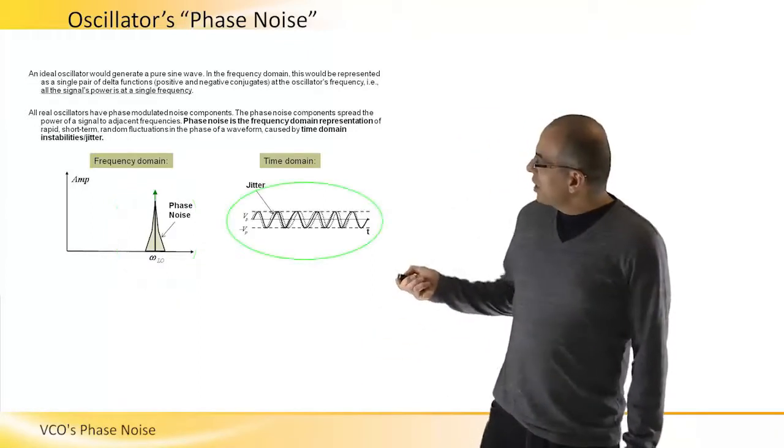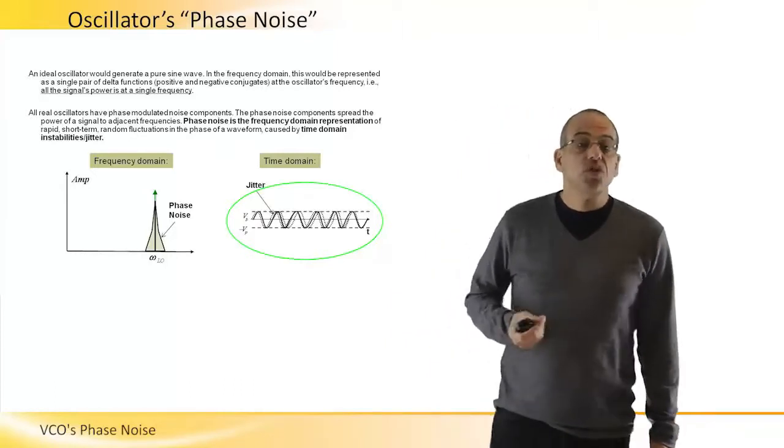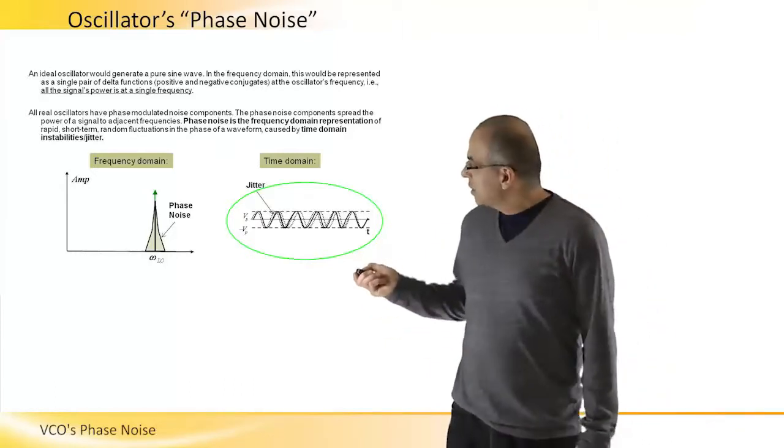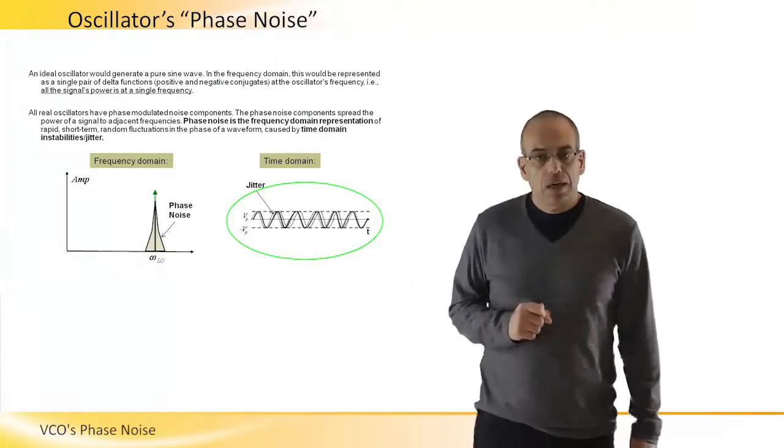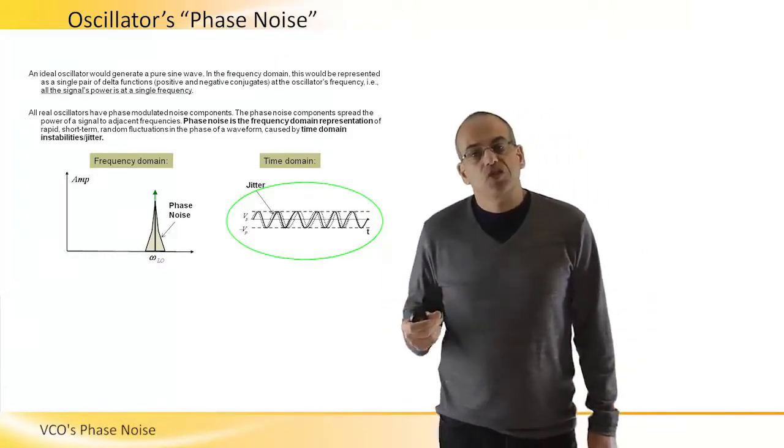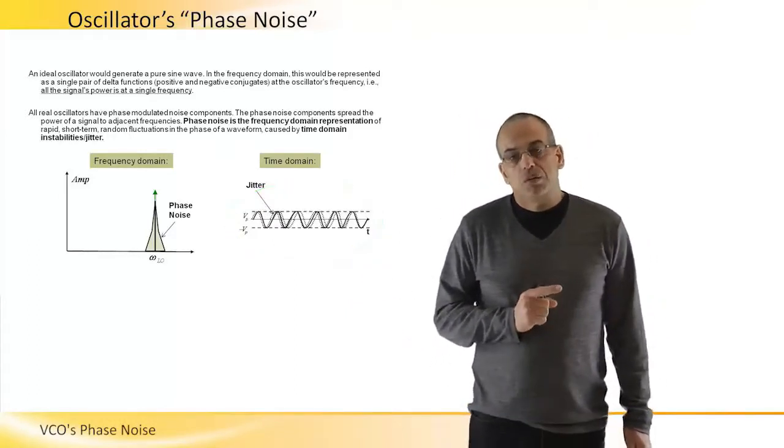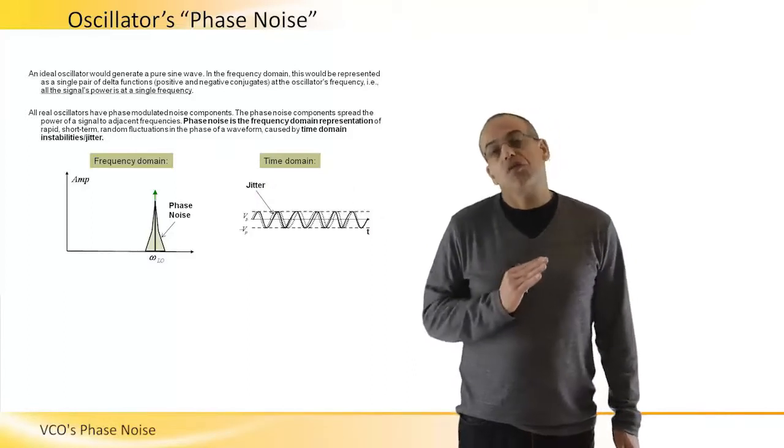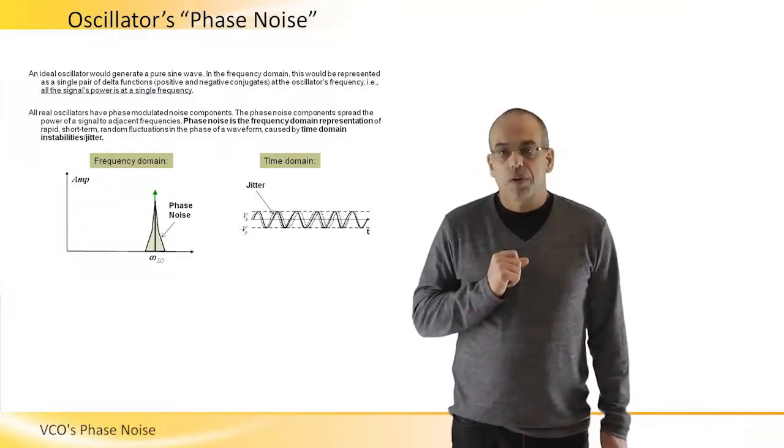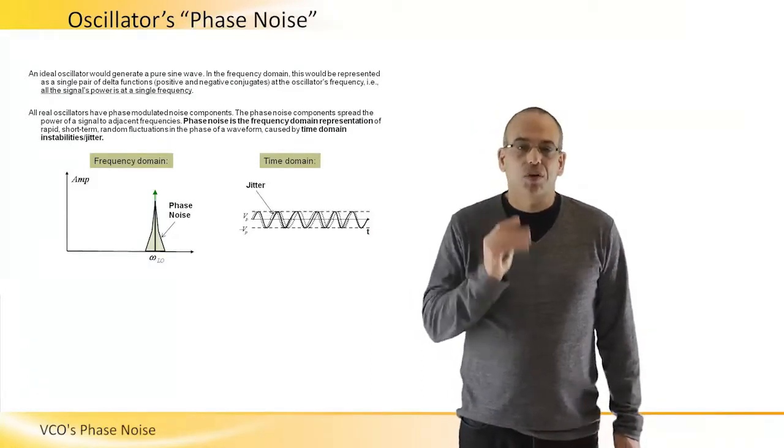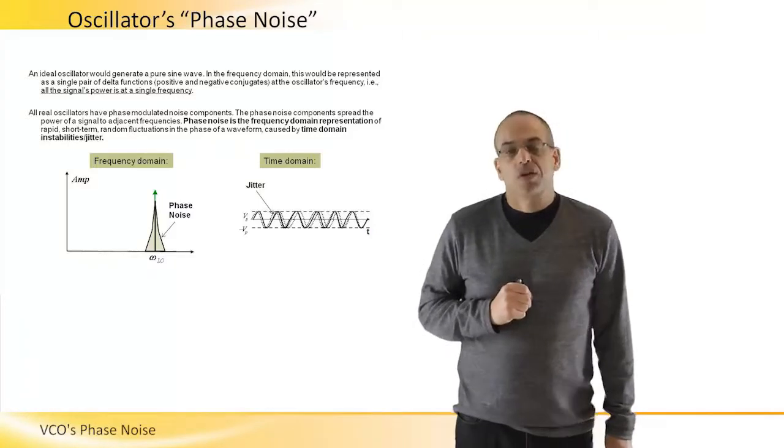In time domain, the same physical phenomena is called jitter. Basically, if we ideally expect to see an ideal sine wave, the jitter will actually introduce itself as the sine wave being jittered or non-stable versus time.